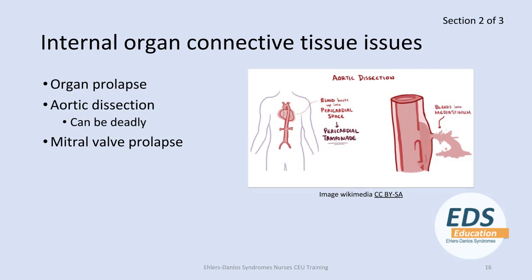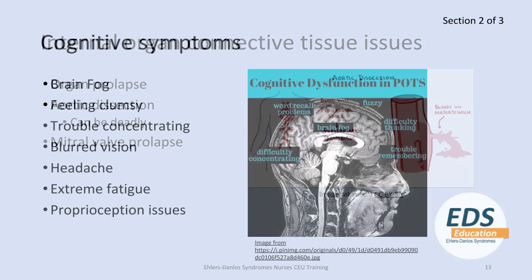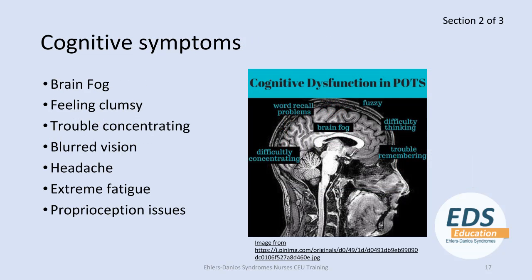Circulatory concerns with EDS, especially vascular EDS, include organ prolapse and aortic dissection, which are very serious and can be deadly. Some types of EDS have accompanying mitral valve prolapse, where the mitral valve is floppy and can lead to mitral regurgitation. Cognitive symptoms include brain fog, feeling fuzzy, difficulty concentrating, proprioception issues, bumping into things, feeling clumsy, headaches, and sometimes migraines — though persistent or sudden severe headaches should always be reported to the doctor and investigated. Blurred vision should also always be investigated, as should extreme fatigue no matter how much sleep the patient gets.